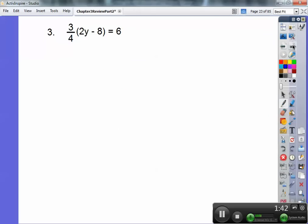Number 3. Fraction again. 3 fourths times the quantity 2y minus 8 equals 6. Now you can distribute the 3 fourths through but you're going to end up with fractions. I say let's just get rid of the fraction right off the bat by multiplying both sides by that denominator 4. So the 4s cancel on the left and then 6 times 4 on the right is 24.